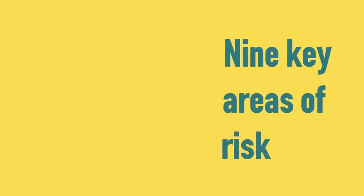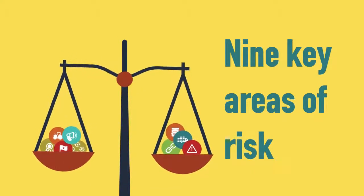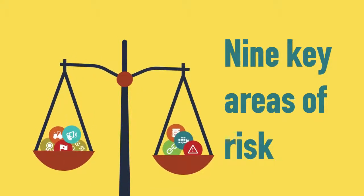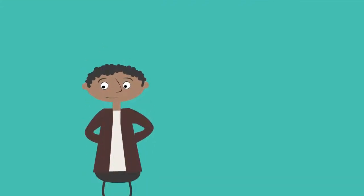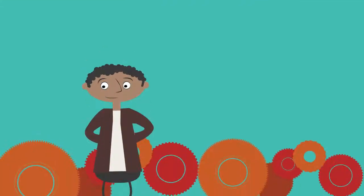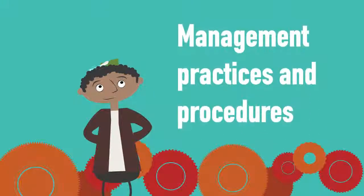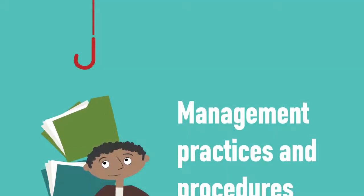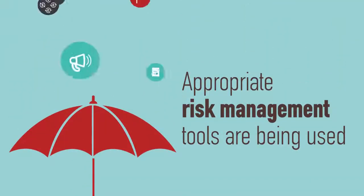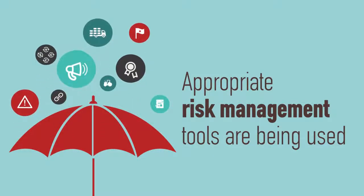The methodology considers nine key areas of risk and weighs them in terms of significance. The loan officer scores the business against management practices and procedures and notes when appropriate risk management tools are being used.